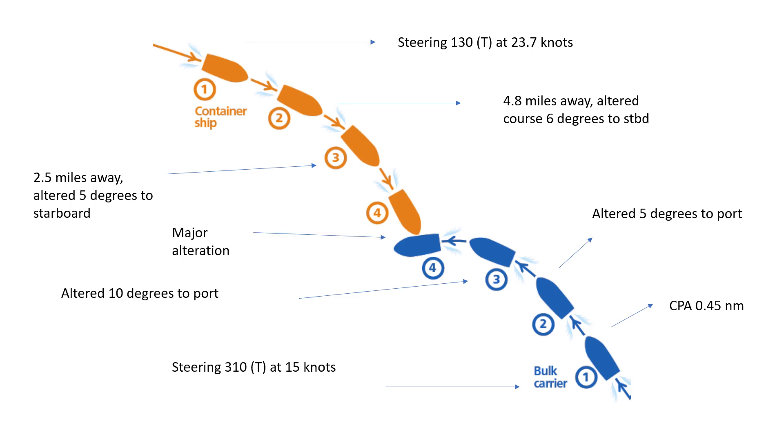Finally, at position number four, just before the collision, the container ship altered 18 degrees to starboard and the bulk carrier altered 50 degrees to port.